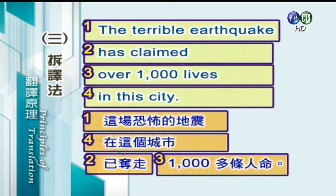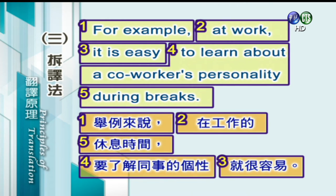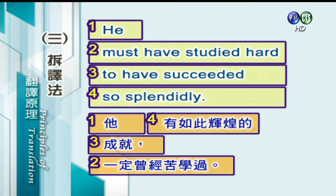We do not appreciate what we have，译成：直到失去了我们所拥有的，我们才会珍惜它，排成三、二、一。The terrible earthquake has claimed over a thousand lives in this city，译成：这场恐怖的地震在这个城市已夺走一千多条人命，排成一、四、二、三。For example, at work, it is easy to learn about a co-worker's personality during breaks，译成：举例来说，在工作的休息时间，要了解同事的个性就很容易，排成一、二、五、四、三。He must have studied hard to have succeeded so splendidly，译成：他有如此辉煌的成就，一定曾经苦学过，排成一、四、三、二。